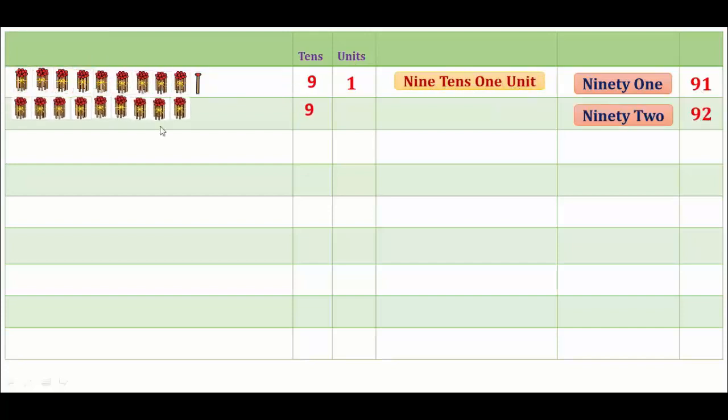92. In 92, there are 1, 2, 3, 4, 5, 6, 7, 8, 9 tens, and 1, 2 units. 9 tens and 2 units make 92.